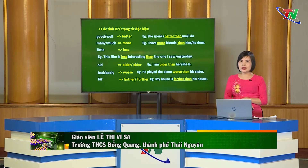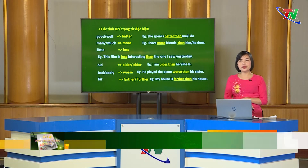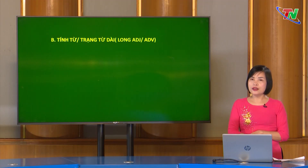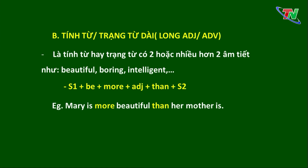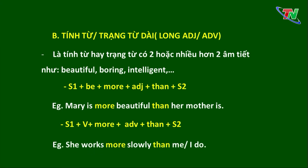Vậy là cô vừa ôn lại về so sánh hơn của tính từ và trạng từ ngắn. Bây giờ chúng ta sẽ chuyển sang so sánh hơn của tính từ và trạng từ dài. Tính từ và trạng từ dài là những từ có hai hoặc nhiều hơn hai âm tiết, như beautiful, boring, intelligent. Cấu trúc tính từ dài: Chủ ngữ 1 + be + more + tính từ + than + chủ ngữ 2. Ví dụ: Mary is more beautiful than her mother. Với trạng từ: Chủ ngữ 1 + động từ + more + trạng từ + than + chủ ngữ 2. Ví dụ: She works more slowly than me, hoặc than I do.